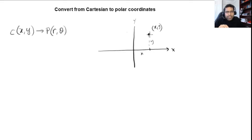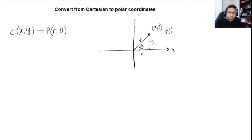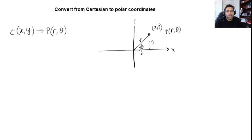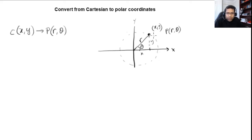The point is moving on a circle with radius r, where r is the distance from the origin. So the point in polar coordinates is (r, theta): r is the radius of the circle the point rotates on, and theta is the angle it makes with the x-axis. When theta is measured anti-clockwise, it is positive.